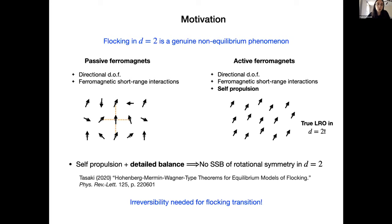It is not self-propulsion per se that causes this effect. And this has been shown very clearly in 2020 by Haltosaki, who showed that if one builds a model where the particles are motile, self-propelled, but the dynamics fulfills detailed balance, then there is no spontaneous symmetry breaking of the rotational symmetry in two dimensions. So this means that irreversibility is the key ingredient that is needed to observe this flocking transition. So this motivates our interest in trying to quantify this irreversibility in flocking models.